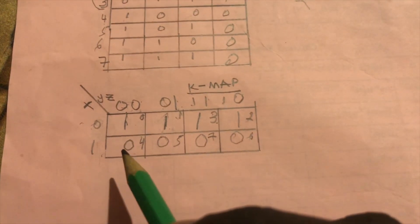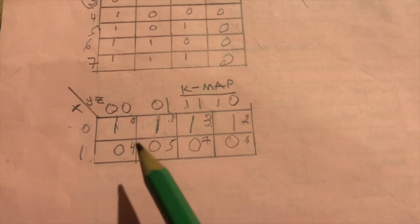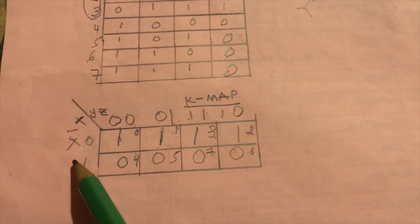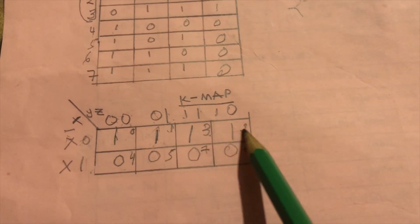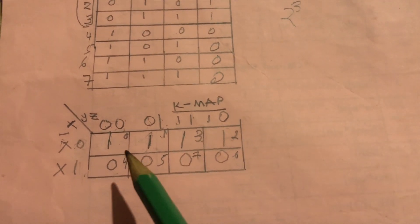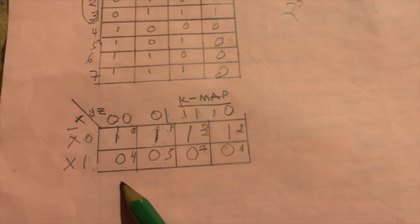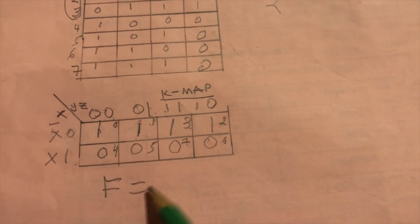It's easier to write a Boolean function when the output is represented on the K-map. Here, 0 corresponds to X-bar and 1 corresponds to X. You can see that for X-bar, we have 1s throughout the table, but for X we have 0s. Since the function is written in relation to the 1s, F equals X-bar.